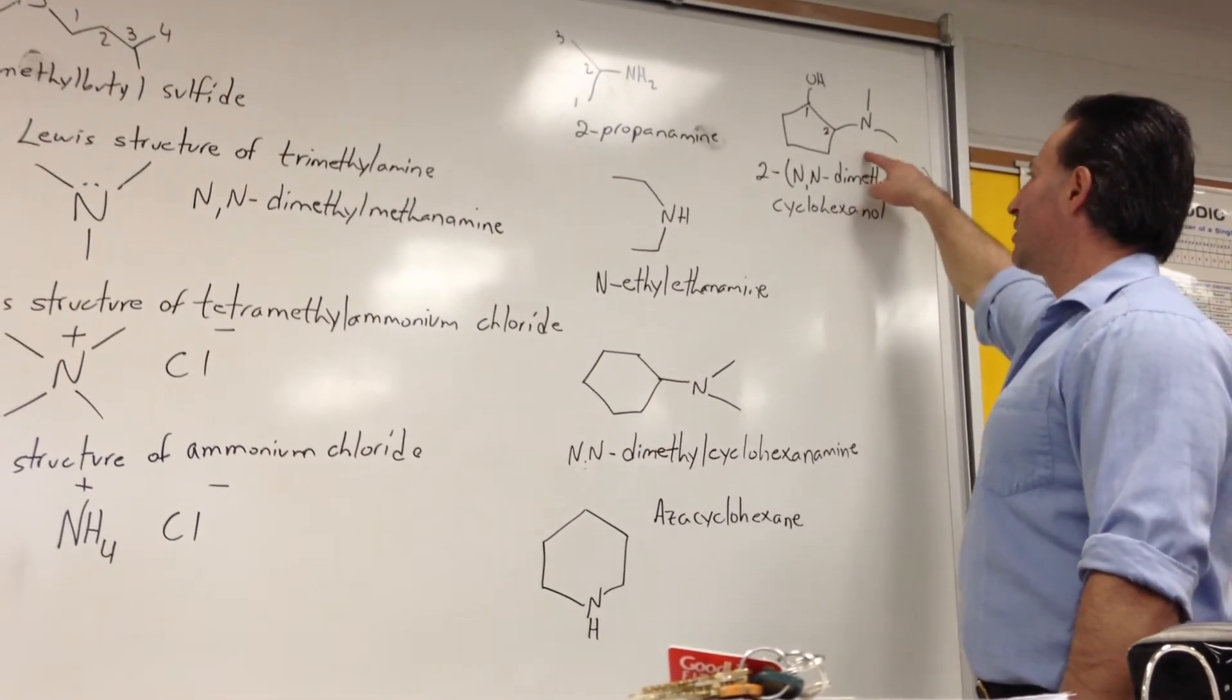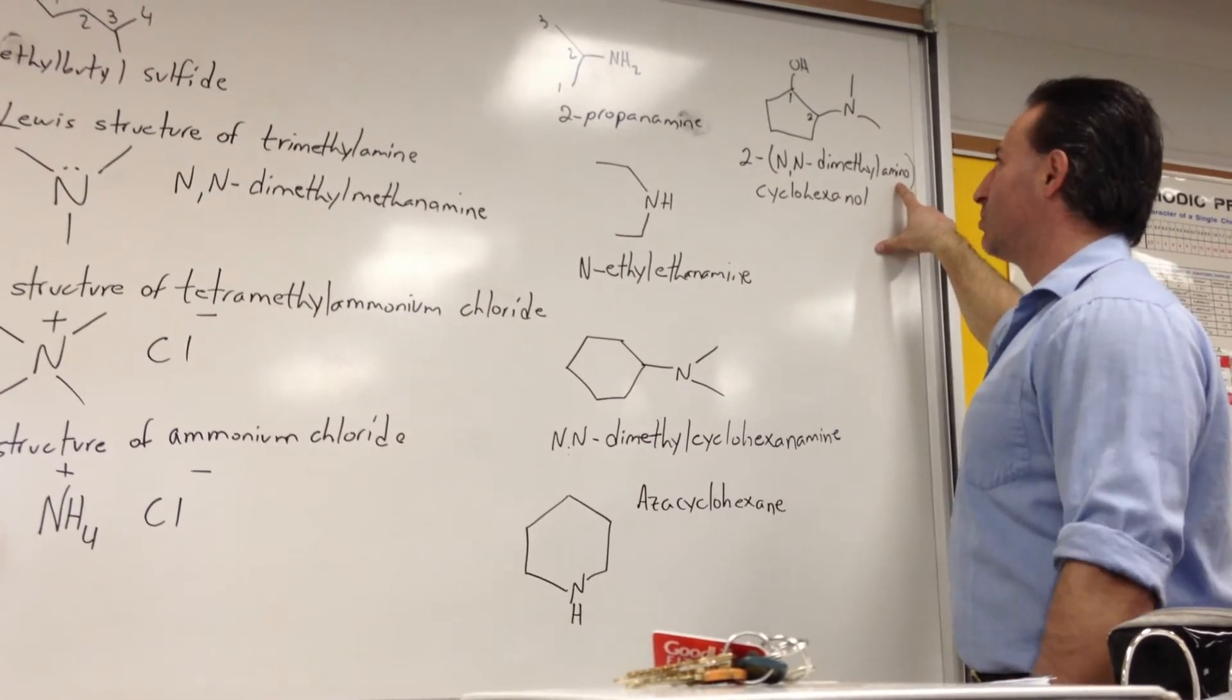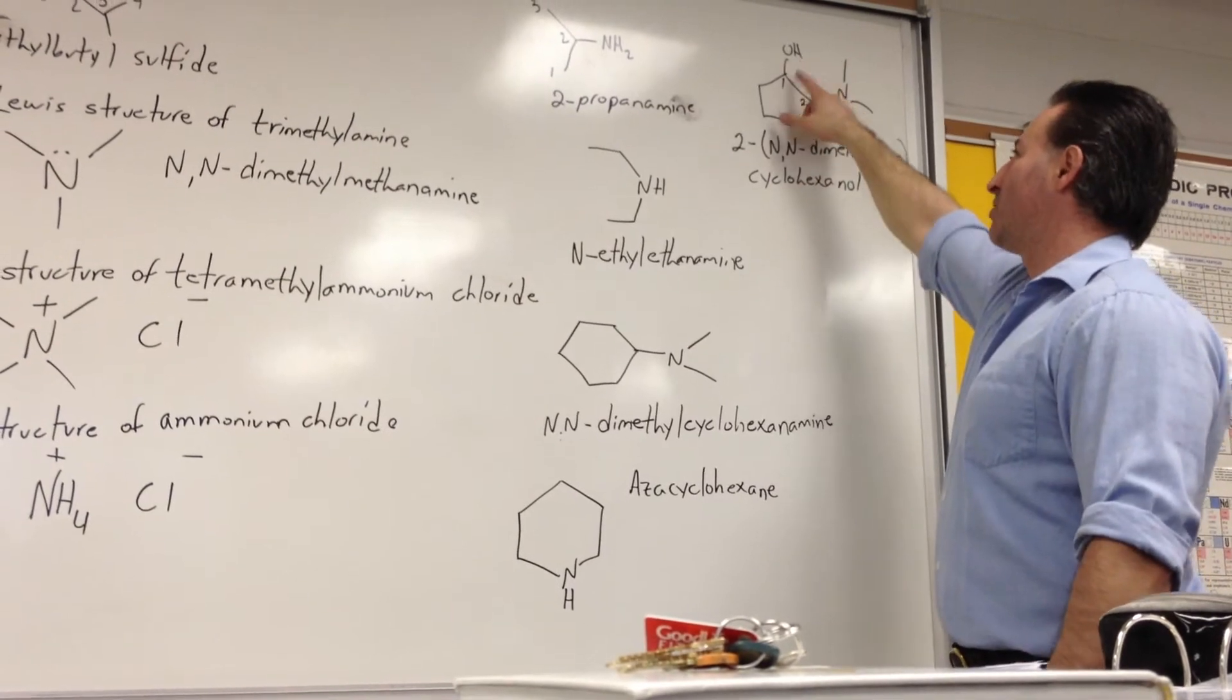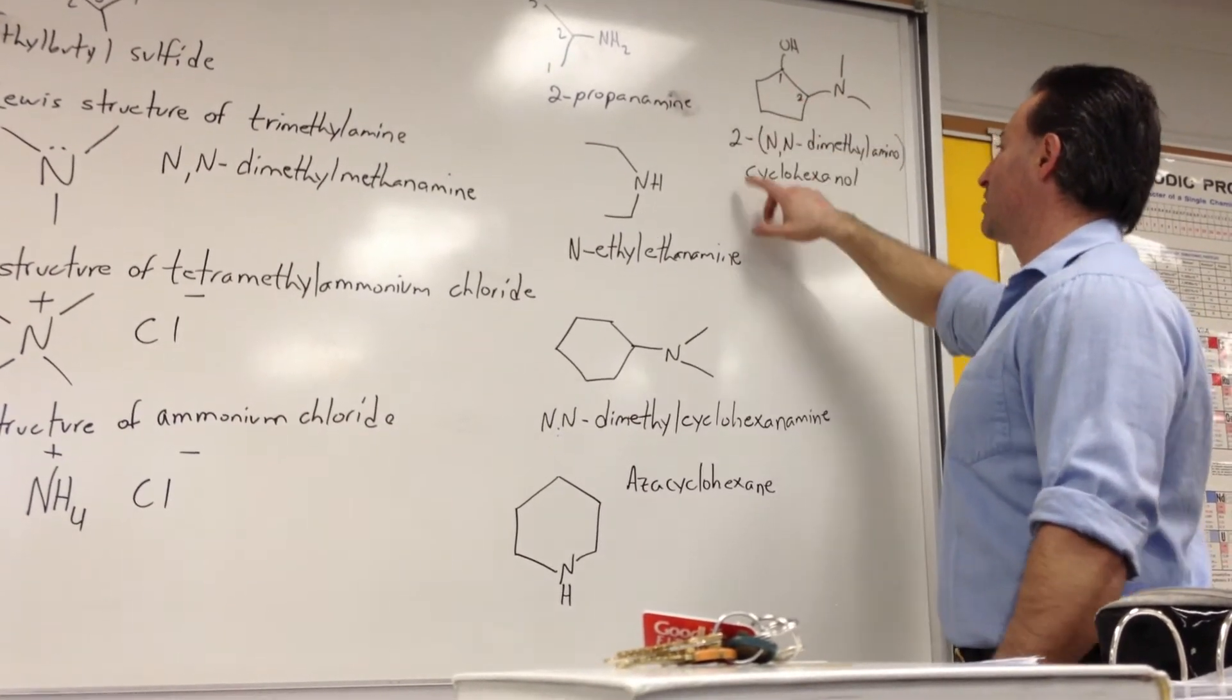And in this molecule, we use the designation amino to show that it's a secondary group. It's of lower importance compared to the rest of the molecule, where the alcohol has higher priority. So it's numbered one, two, to show that the alcohol group has higher priority. So two,